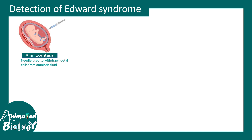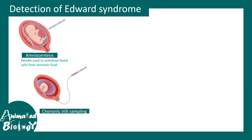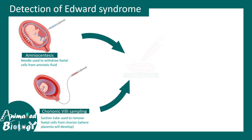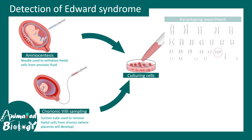Amniocentesis is a process in which a needle is used to withdraw amniotic fluid from around the fetus. Chorionic villus sampling involves taking a small amount of fetal chorion tissue. The cells obtained are then cultured in a dish, and karyotyping is performed. If there is trisomy 18, three copies of the 18th chromosome will appear in the karyotype — this is the confirmatory test for Edward syndrome.